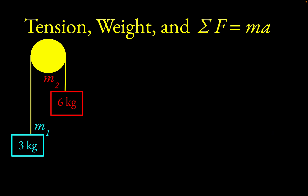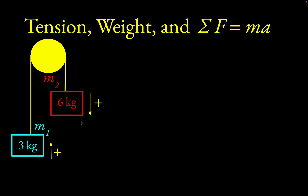Let's take a look at one more example — a situation called an Atwood machine. You have a light, massless pulley with a heavier mass on one side than the other. The goal is to find the acceleration of the system. We choose positive directions as before: the six kilogram mass goes down, so I choose downward as positive for it; mass one moves up, so I choose upward as positive for it. That way, whatever acceleration we find for the six kilogram mass will numerically equal the upward acceleration of the three kilogram mass.